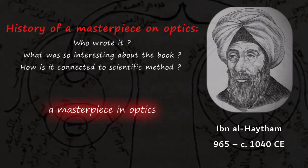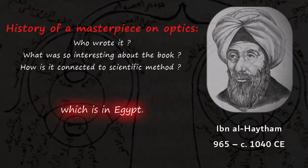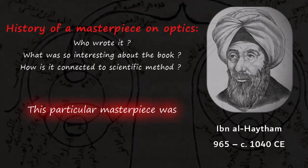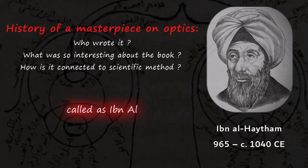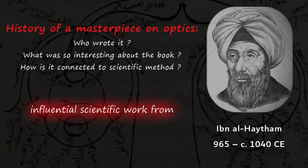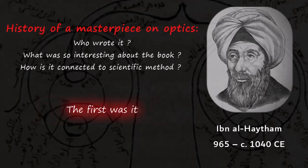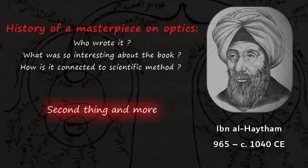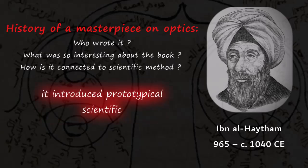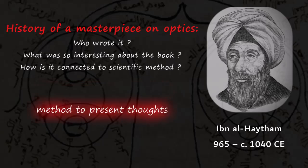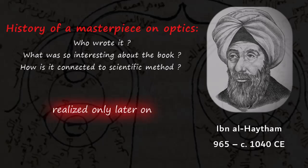About a thousand years ago, a masterpiece in optics was written in Cairo, Egypt. This masterpiece was written by a person called Ibn al-Haytham in and around 1000 CE. It is considered one of the most influential scientific works from the medieval period and it had two major implications: it addressed questions related to optics including vision, and more importantly, it introduced a prototypical scientific method to present thoughts.